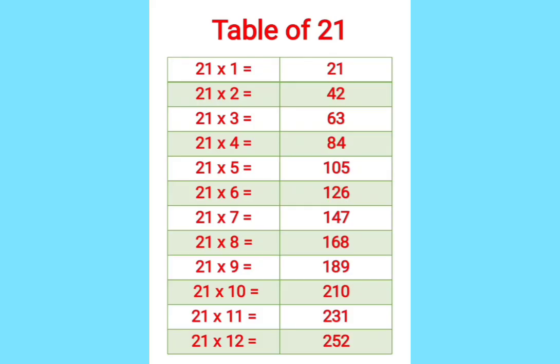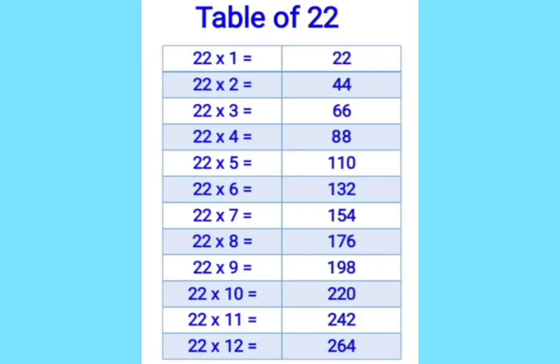21 ones are 21. 21 twos are 42. 21 threes are 63. 21 fours are 84. 21 fives are 105. 21 sixes are 126. 21 sevens are 147. 21 eights are 168. 21 nines are 189. 21 tens are 210. 21 elevens are 231. 21 twelves are 252.